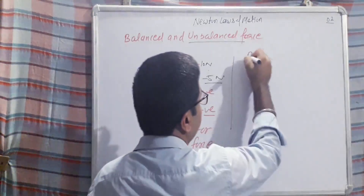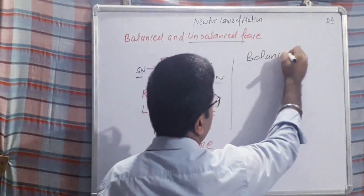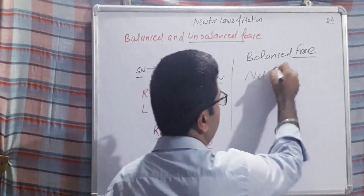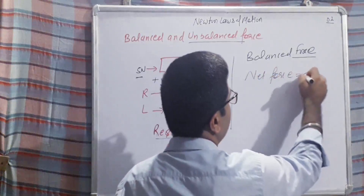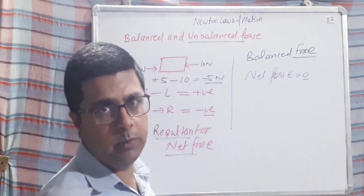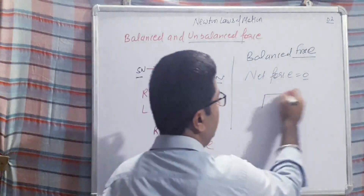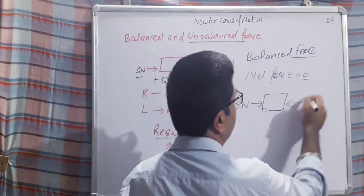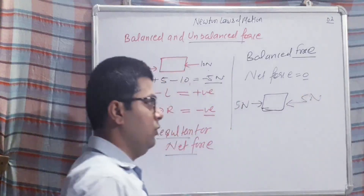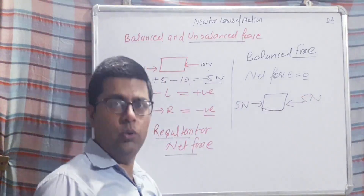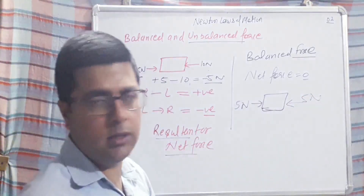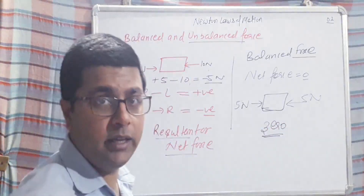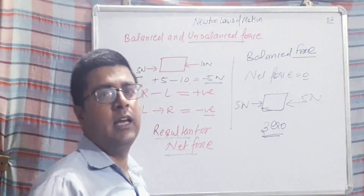On the other hand, if we talk about balanced force, as the name suggests, the forces on the body are balanced, meaning the net force on the body is equal to zero. For example, if 5 newton is applied from the right to the left and 5 newton from the left to the right, the total force on the body is zero — this is called balanced force.